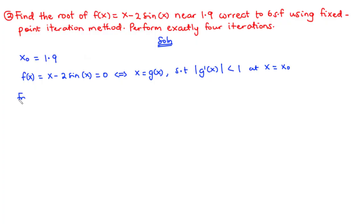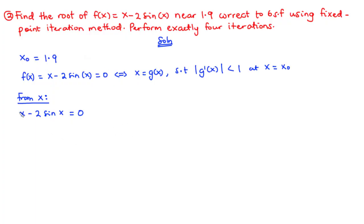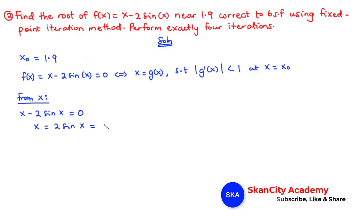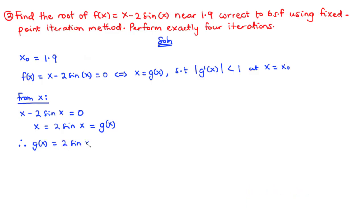We can make x the subject. Considering f(x) = 0, we have x - 2sin(x) = 0. Let's make x the subject by transposing the term to the right-hand side, so we have x = 2sin(x). Thus, the right-hand side becomes g(x). Therefore, g(x) = 2sin(x).